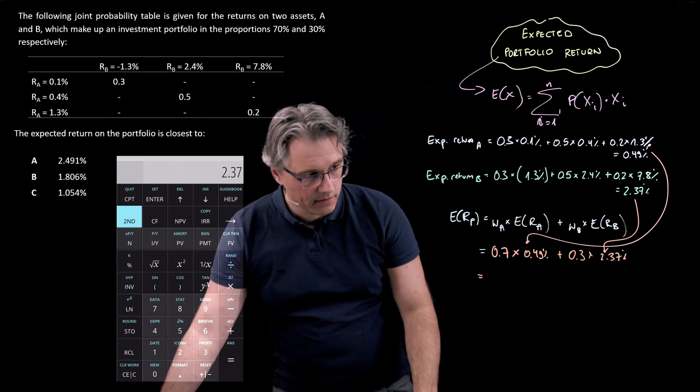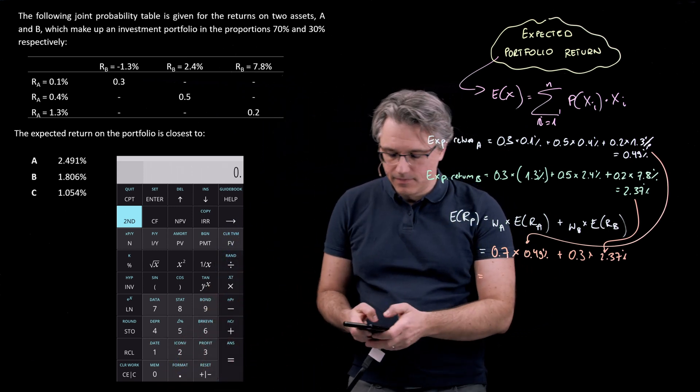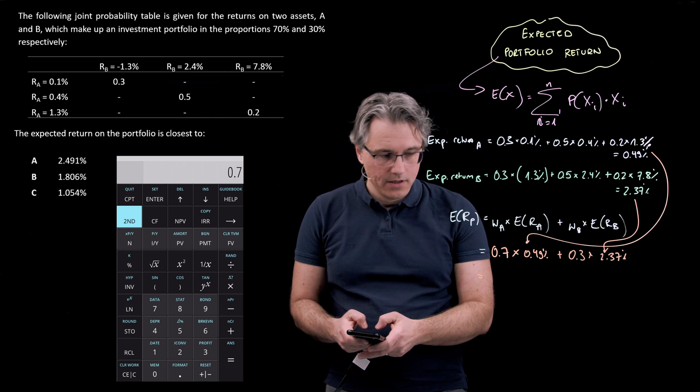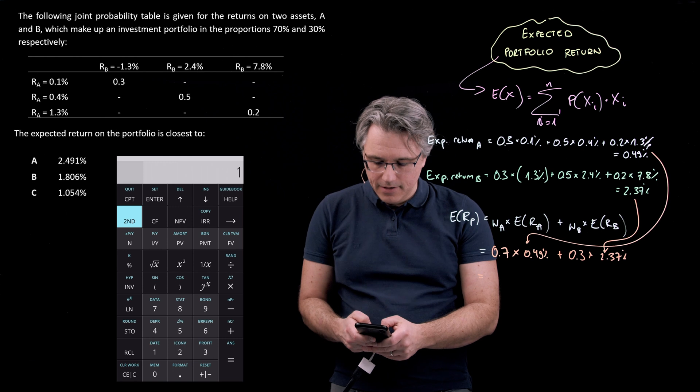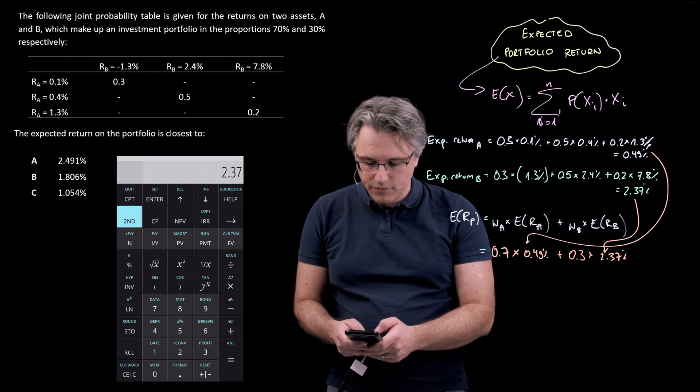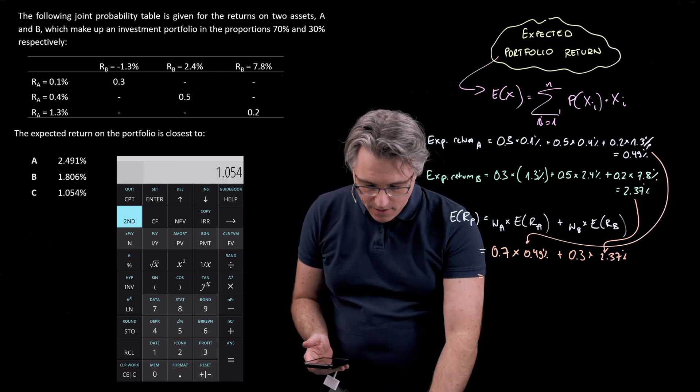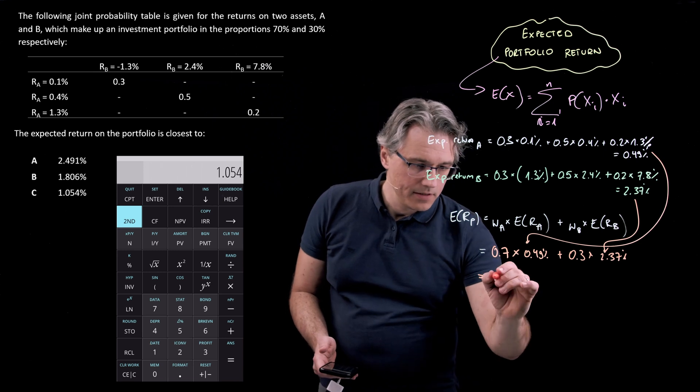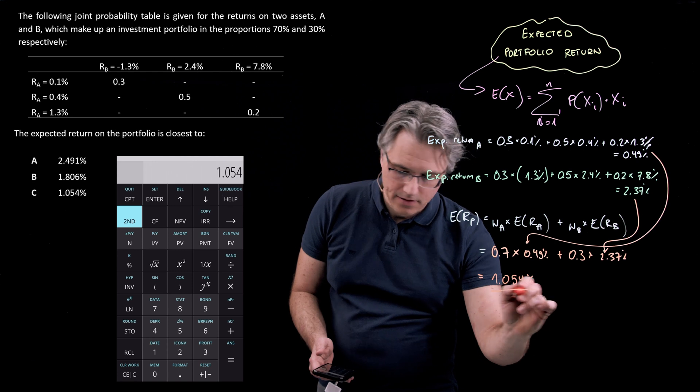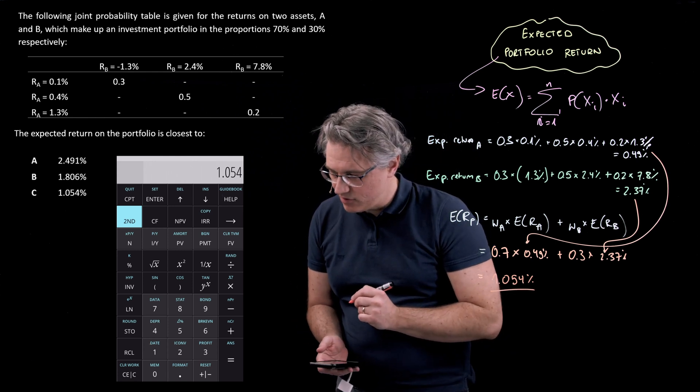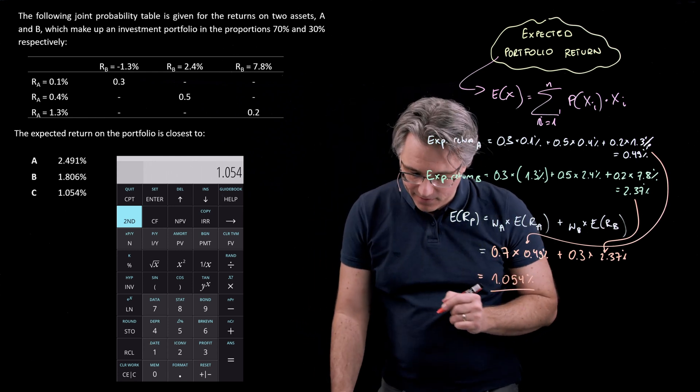Once again, let's check on the calculator what this gives. So 0.7 times 0.49, plus 0.3 times 2.37%. So the answer is 1.054%, and this is very much in line with answer C.